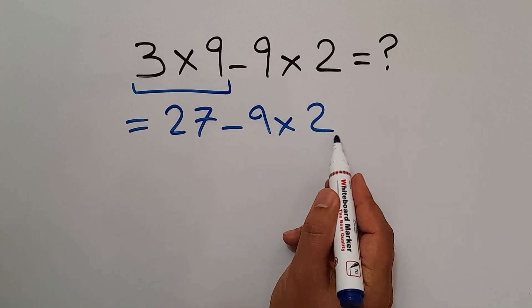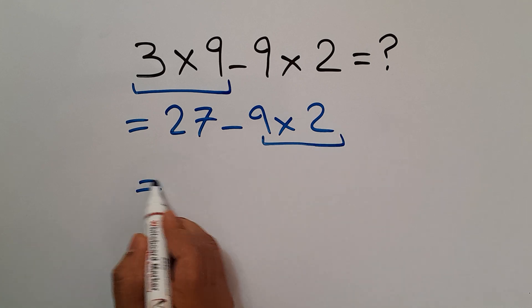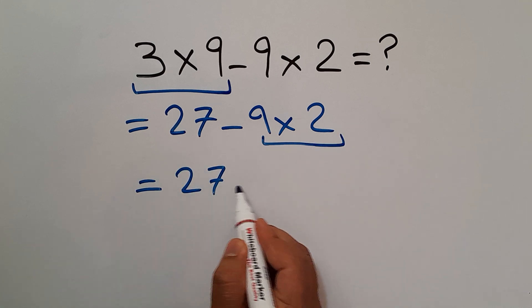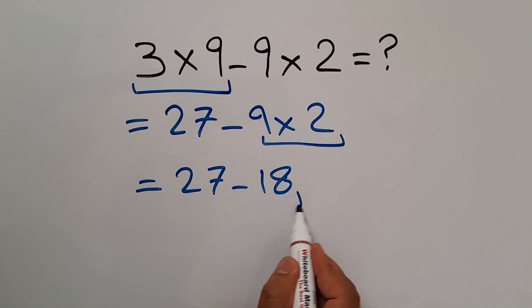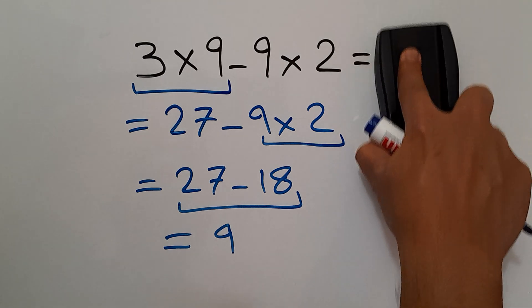9 times 2 equals 18, so 27 minus 18, which equals 9. So our final answer to this problem is 9.